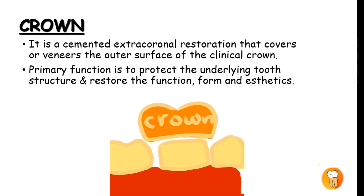Crown is one of the prostheses in FPD. The crown used in FPD is an artificial crown — it is a cemented extracoronal restoration that covers or veneers the outer surface of the clinical crown. Its primary function is to protect the underlying tooth structure and restore function, form, and aesthetics.